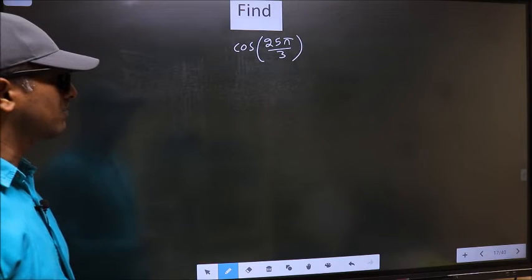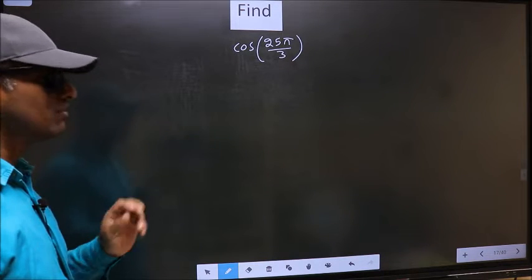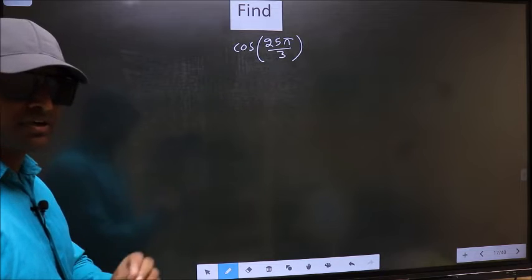Find cos 25π/3. To find this, we should follow this method.